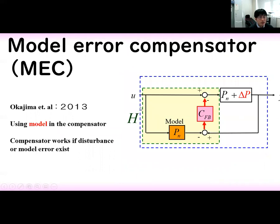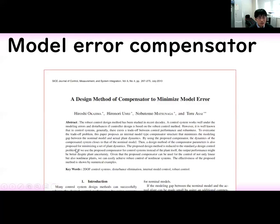Next, I introduce the model error compensator, MEC. This structure was produced by Okajima. It includes the model in the compensator and the compensator works if disturbance or model error exists. This is the first page of the model error compensator paper.